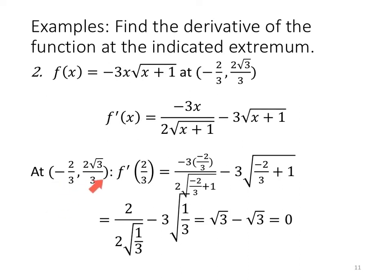Also checking at x = −2/3: evaluating f'(−2/3) involves the square root of 1/3 in a couple of places. The two values simplify, and the square root of 1/3 is √3/3. Using the reciprocal of the square root of three, it simplifies and we end up with a derivative of zero. Check those calculations — make sure you can verify that step algebraically using the quotient rule of radicals along with a reciprocal.